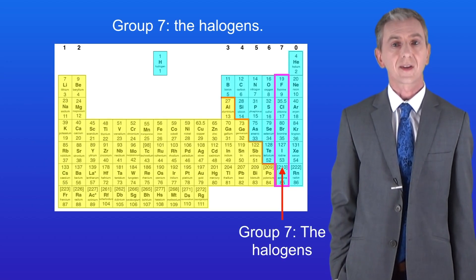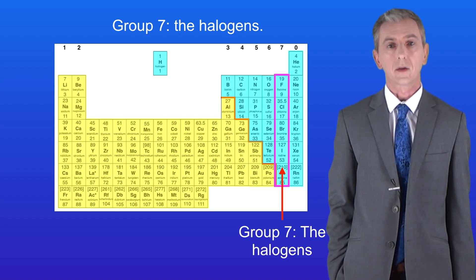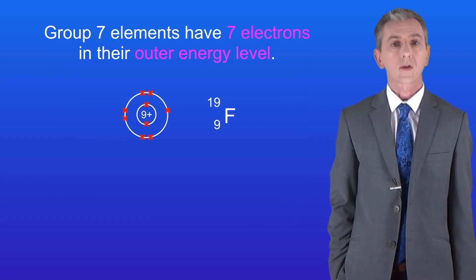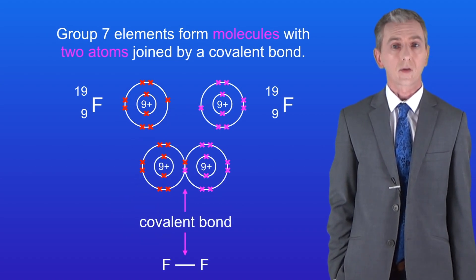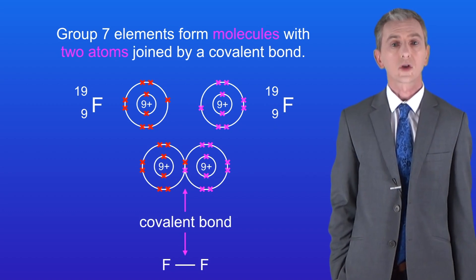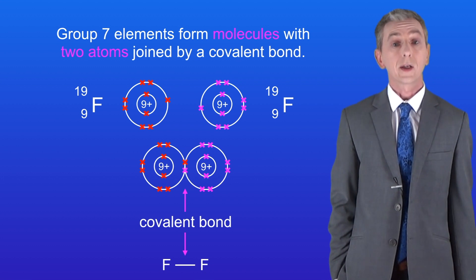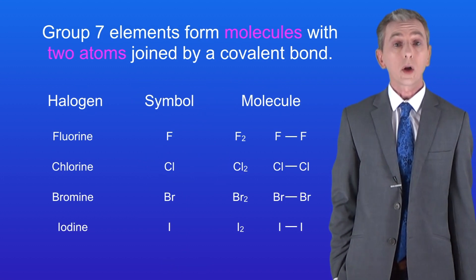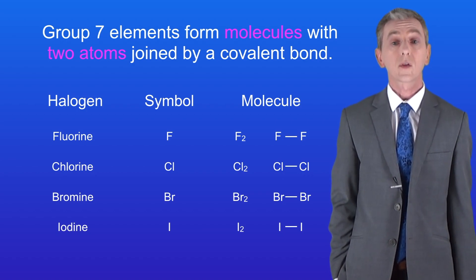In the last video we started looking at Group 7, also called the halogens, which we find on the right of the periodic table — this tells us that the halogens are all non-metals. Group 7 elements have seven electrons in their outer energy level, as we can see with fluorine and chlorine. This means that as elements, Group 7 form molecules with two atoms joined by a single covalent bond, like the fluorine molecule. All of the Group 7 elements form molecules like this, and we can see them all here.